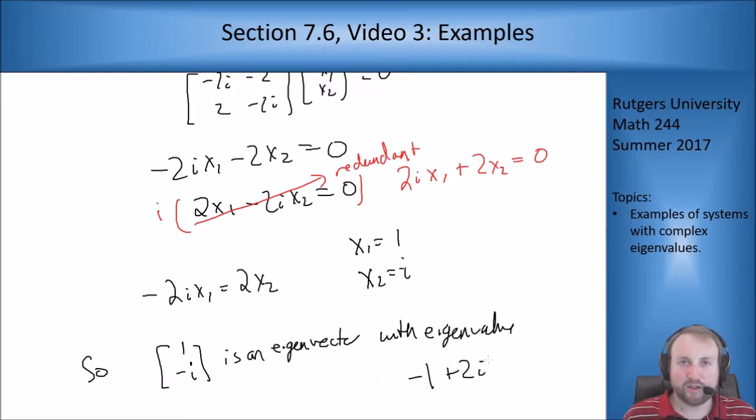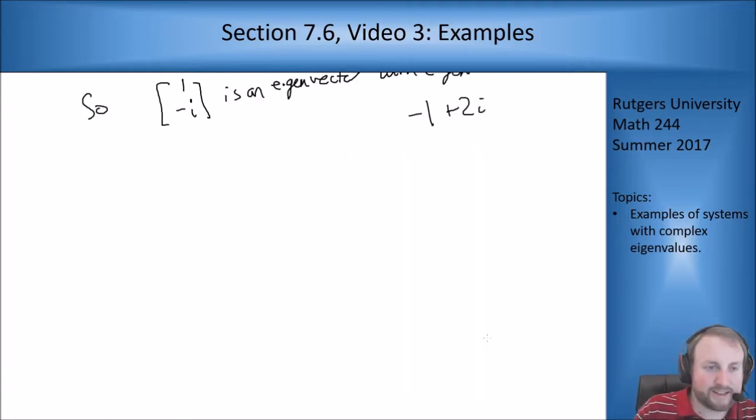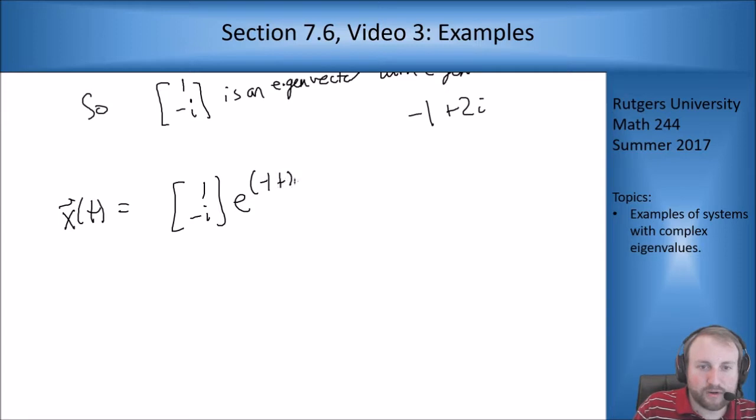So now what I want to do is I want to take this information and turn it into two independent solutions by getting the real and imaginative parts of the respective solutions. So ideally, if I could use complex numbers, my solution would look like this. I would have an x of t equals 1, minus i, e to the minus 1 plus 2i t, solve my problem. But I want real valued solutions, so I need to split this into its real and imaginary parts.